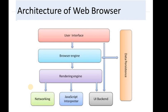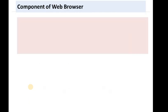Now, let's look at the architecture of a web browser. You can see there is a stack of blocks: the upper one is the user interface, then browser engine, rendering engine, networking, JavaScript interpreters, UI backend, and data persistence. Let's discuss each in more detail.